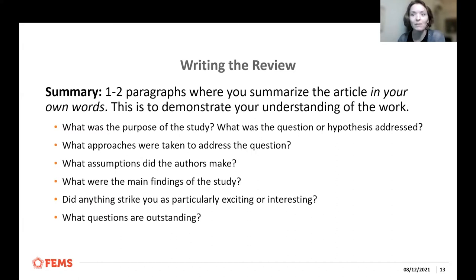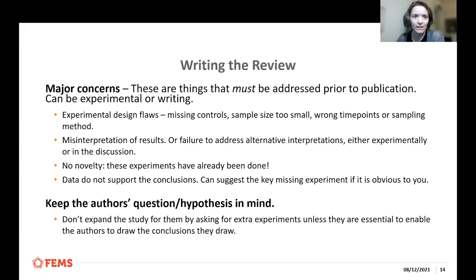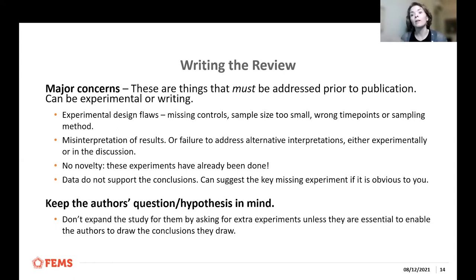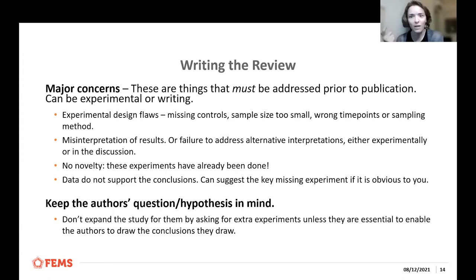You can also include outstanding questions — for example, 'they've demonstrated X; this leads to the following interesting questions for follow-up studies.' The next general section in the review covers major concerns — things that must be addressed prior to publication. These can be experimental requirements, major writing requirements, or both. Things that typically constitute major concerns include experimental design flaws, missing controls, sample sizes that are too small, inappropriate numbers of repeats, or wrong statistics leading to wrong conclusions.